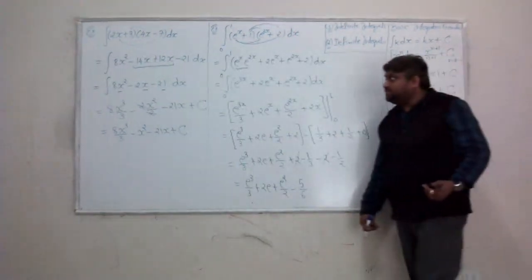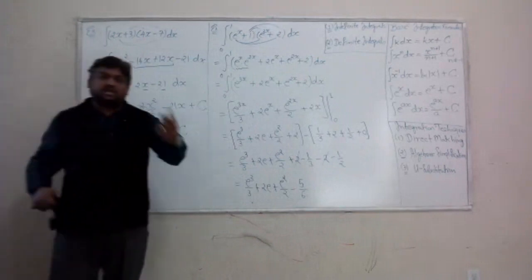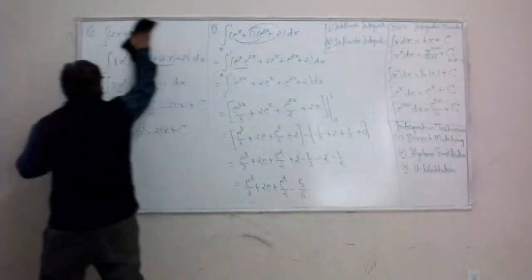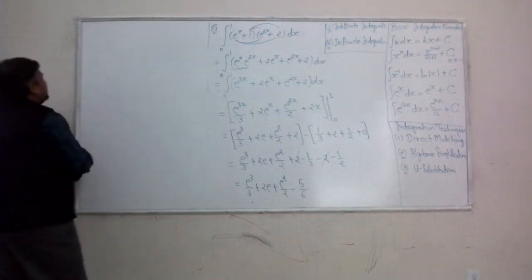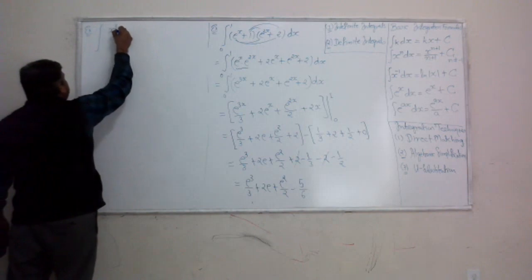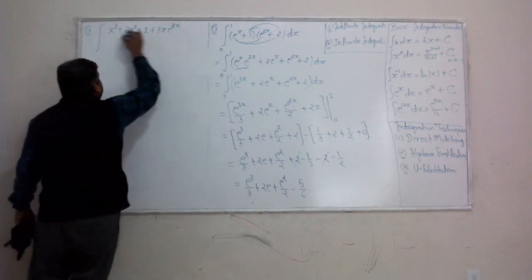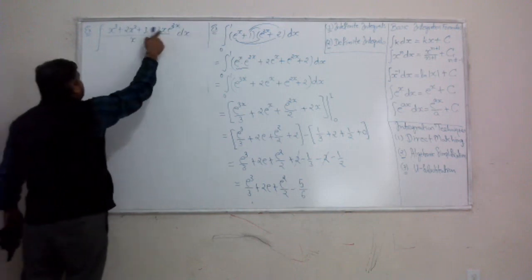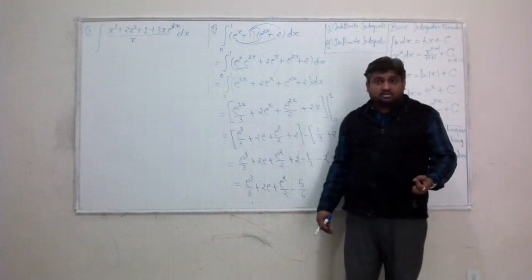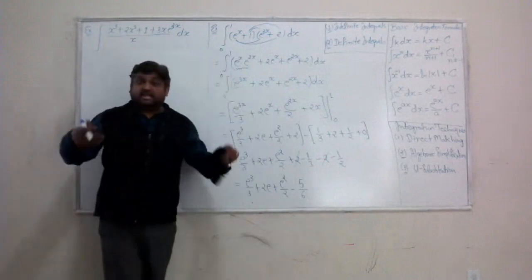There are two meanings of algebraic simplification. The first is foiling or expanding a product. The second applies when you have multiple terms in the numerator with a single term in the denominator. For example, integrating (x³ + 2x² + 1 + 3x·e^(3x)) / x. We split that denominator over every single term in the numerator and see if it works.